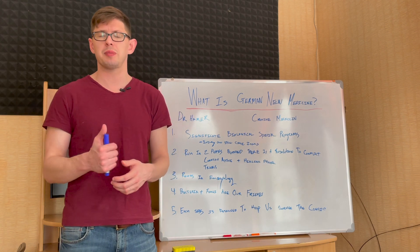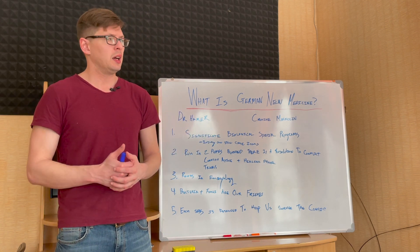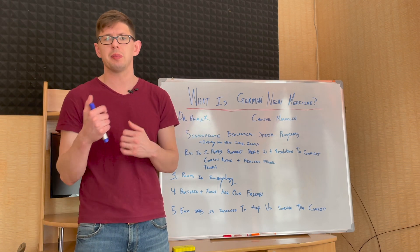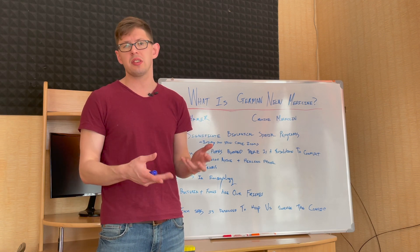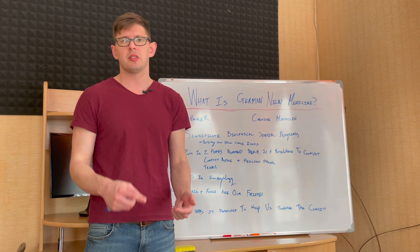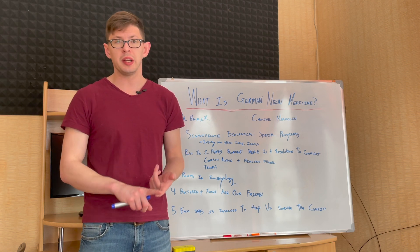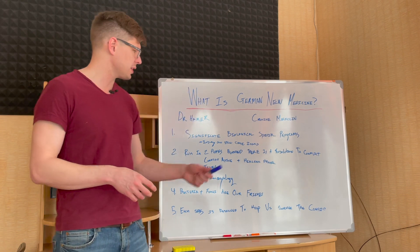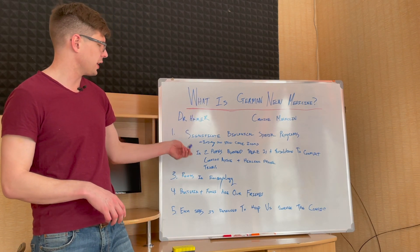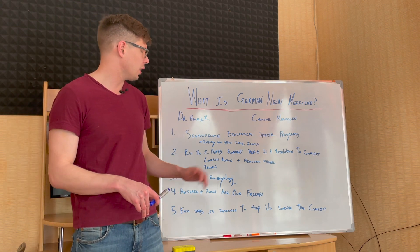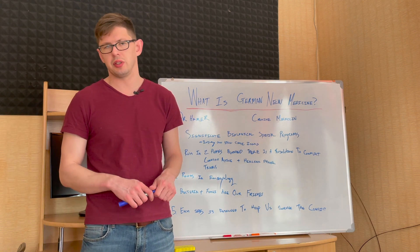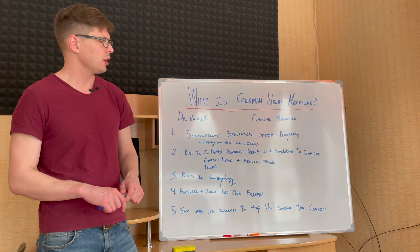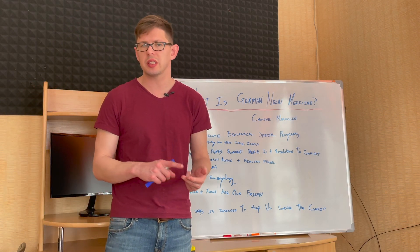It does this with cell proliferation - making more cells so that your digestive organs can perform better and break down or absorb this morsel. Then when the conflict gets resolved, maybe you kiss and make up with your parents or see things from a different perspective, that is when the conflict gets resolved and you go into the healing phase. Your body no longer needs these extra cells, so it starts to get rid of them.